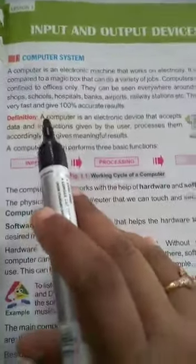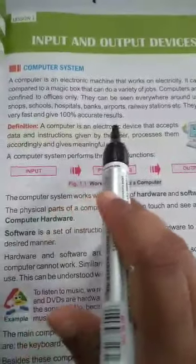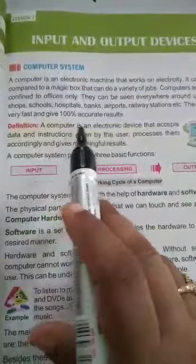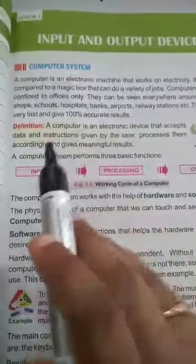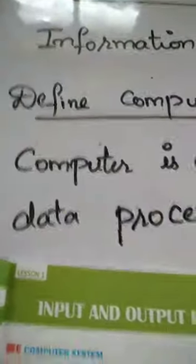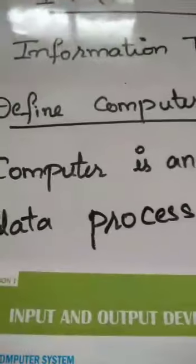Computers work very fast and give 100% accurate results. A computer is an electronic device which accepts data, processes it, and gives result or information.